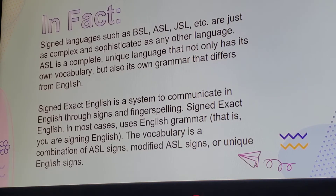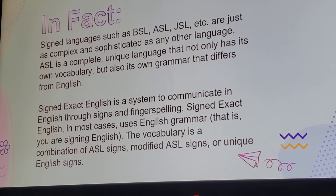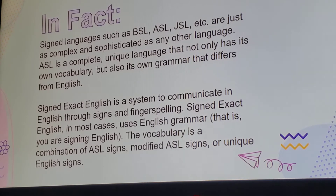Signed Exact English is a system to communicate in English through signs or fingerspelling. It uses English grammar — it is signing English — but the vocabulary is a combination of ASL signs, modified signs, and unique singular signs. I bring this up to acknowledge the misconception that ASL is just English that is signed, when really it's not — it has its own complex set of grammar. But usually if you're an English speaker learning some signs, what you're doing is probably something similar to what we'd call Signed Exact English.